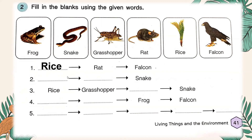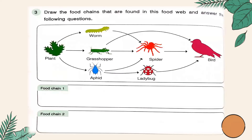For number two through number five, you can do this on your own — take your time. Always remember that a plant is always the producer in a food chain. For your homework, open your book to page 42. The direction says: draw the food chains that are found in this food web and answer the following questions. This is an example of a food web — interconnected groups of food chains.